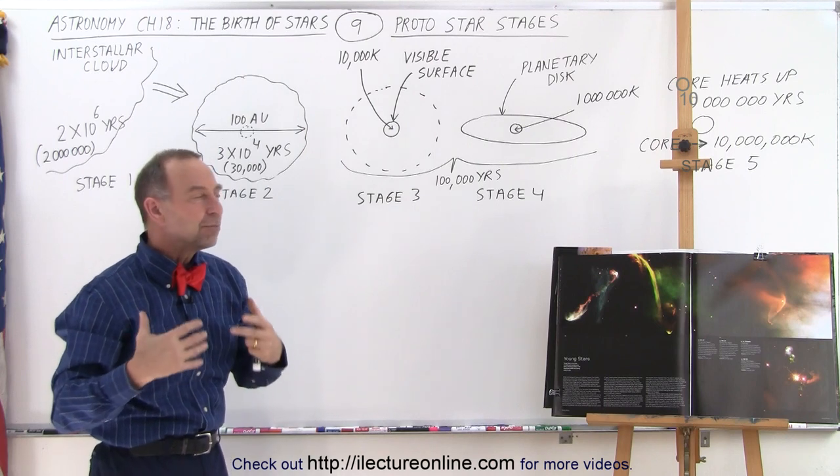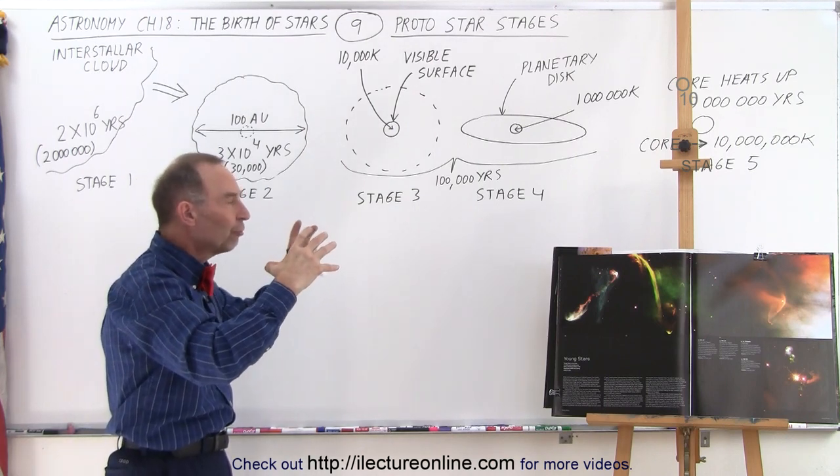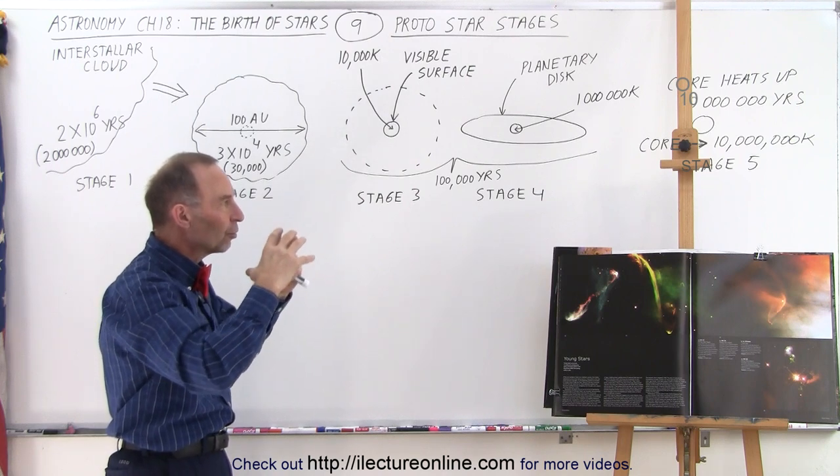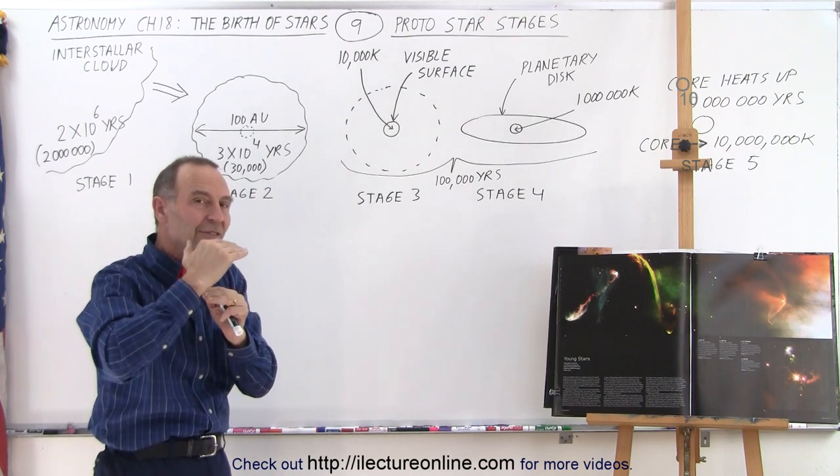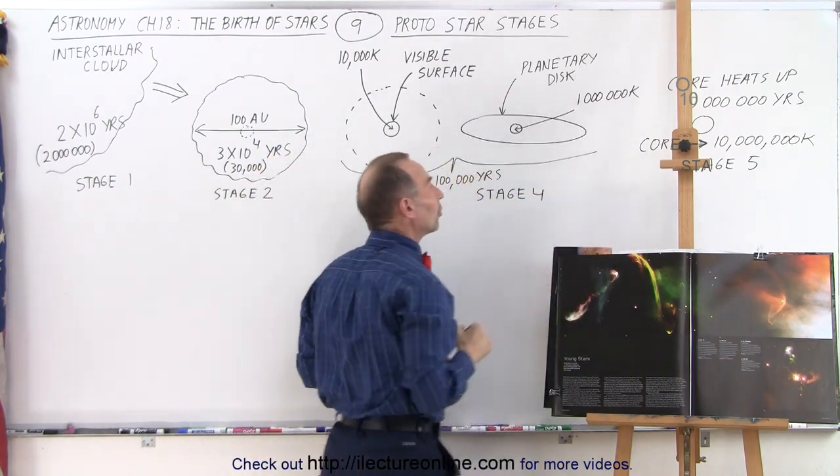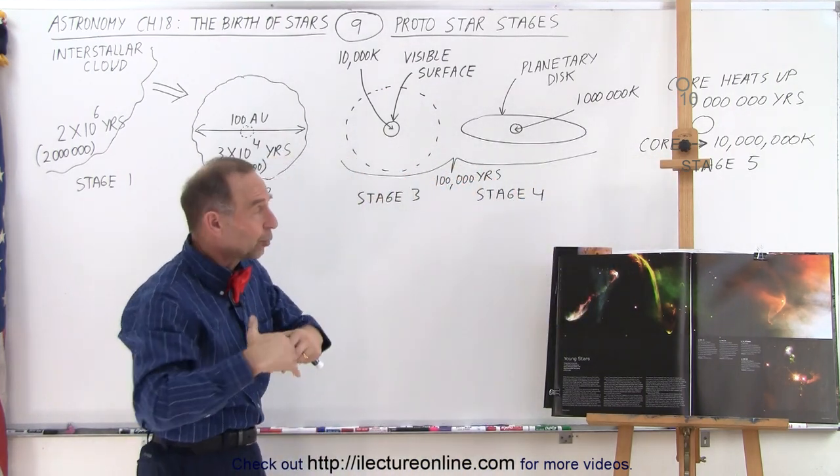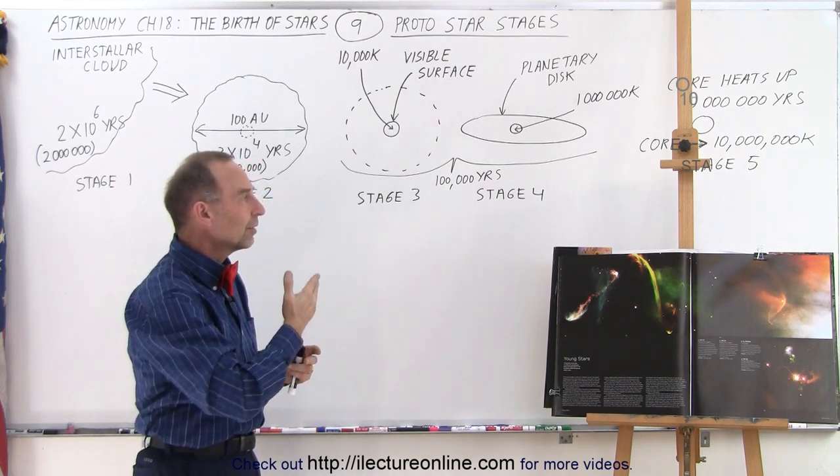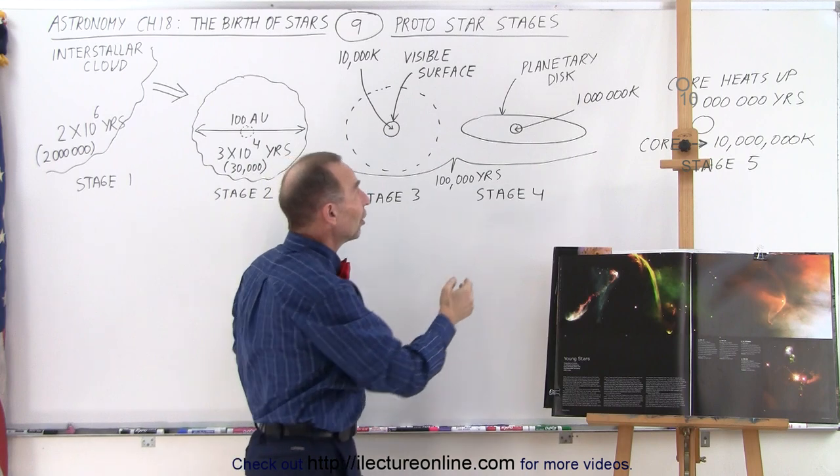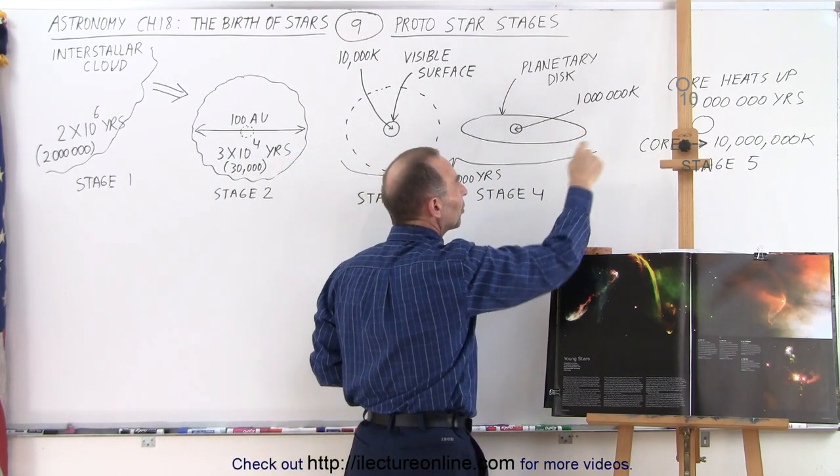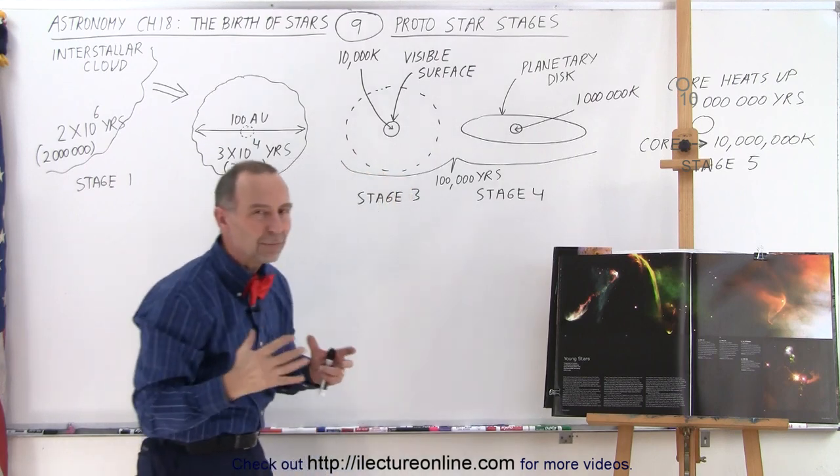And then for the next 10 million years the gravitational forces begin to compress the star into a smaller and smaller volume, slowly raising the core temperature up until the core temperature eventually reaches 10 million degrees. At that stage, of course, it becomes a real main sequence star, but it takes about 10 million years to get it from the stage where the temperature at the center is 1 million degrees to where the temperature is about 10 million degrees.